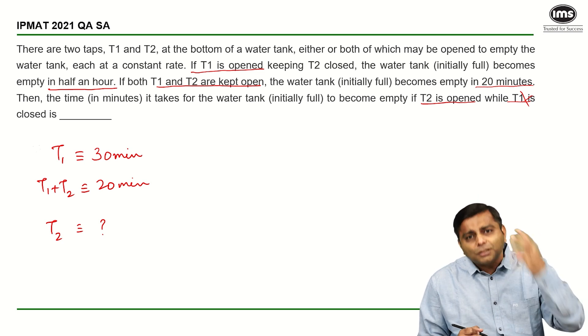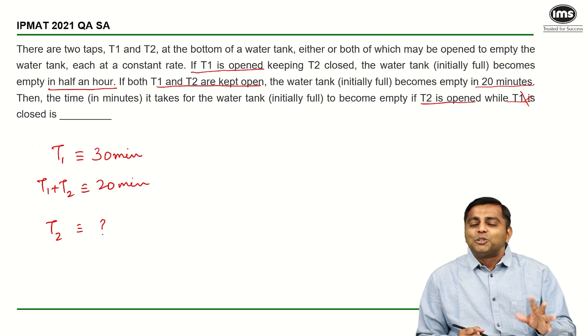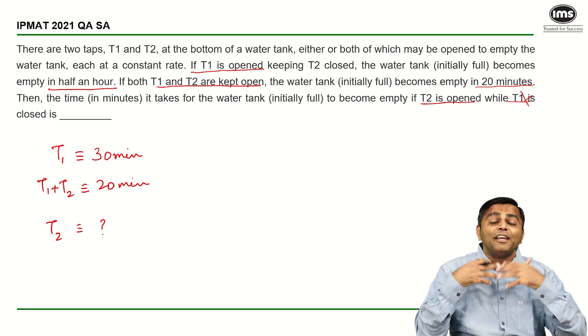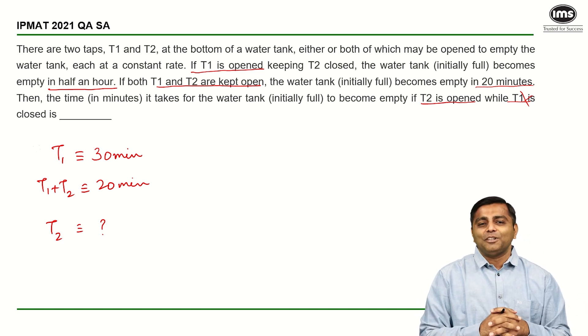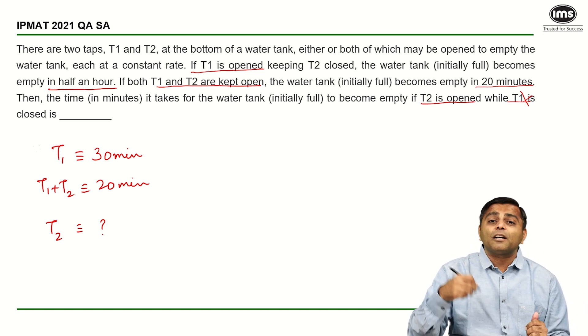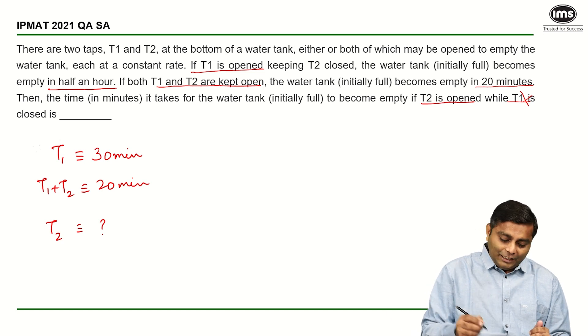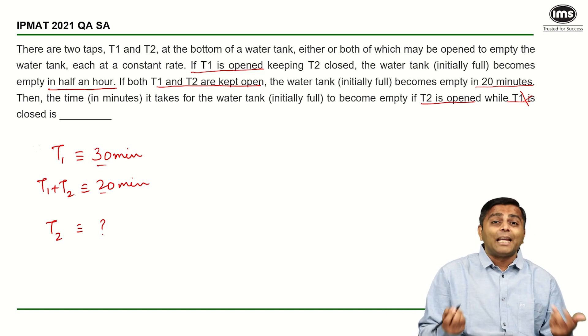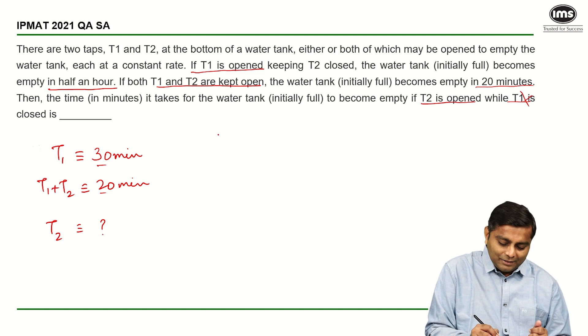If you are able to reduce this whole question into these three statements and if you have done even the first five questions of time and work, you should be able to solve this question. You start by assuming the capacity of the water tank should be the LCM of the individual times. So 30 and 20, LCM is 60, so I am going to assume the capacity of the water tank to be 60 liters.